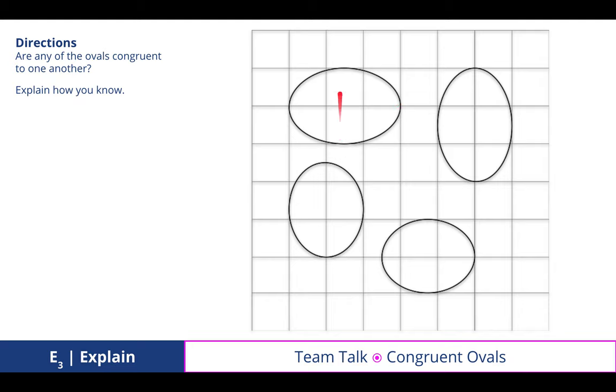And the same width, which is in the shorter direction, which has two units. Then you also argued and defended the fact that these two at the bottom are also congruent, despite the fact that they're rotated, because of their length being two and a half and their width being about two units.